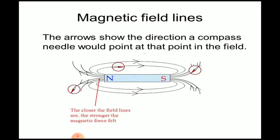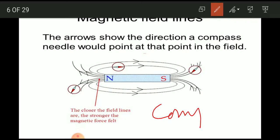The arrows on magnetic field lines show the direction a compass needle would point at that point in the field. This magnetic field is traced with the help of a compass. The closer the field lines are, the stronger the magnetic field force felt. Whenever there is flow of current, a magnetic field will be produced, and when there is a change in magnetic flux, an induced current will be produced.